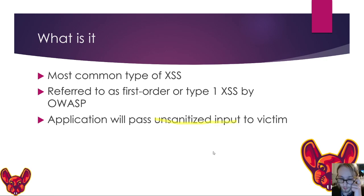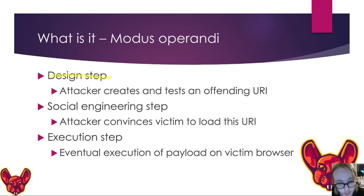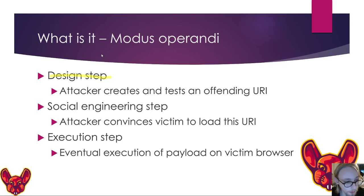The application will basically pass that unsanitized input onto the victim. The modus operandi for reflected XSS starts with a design step in which the attacker creates and tests an offending URI. Then comes social engineering steps to get the victim to click the URI or visit the infected website. The eventual execution of the payload happens on the victim's browser. As bug bounty hunters and penetration testers, we stop at the design step, unless social engineering is specifically in our assignment.